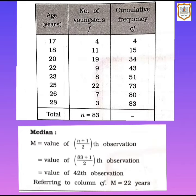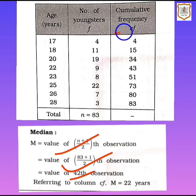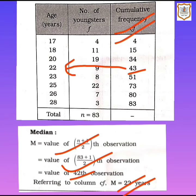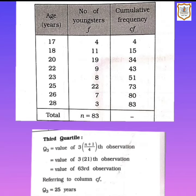For the median, the formula is (n+1)/2, so (83+1)/2 = 42nd observation. In the cumulative frequency column, the 42nd observation lies in 43, and in front of that the variable x is 22. So median = 22.